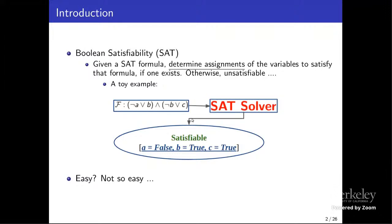Boolean satisfiability, or SAT, is a fundamental problem in computing science. It has profound implications in computational complexity, logic, and artificial intelligence. Given a formula of boolean variables, the task of SAT solving is to determine an assignment of the variables that satisfies that formula, or to report that no solution exists.